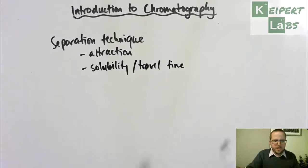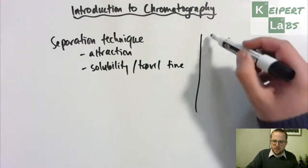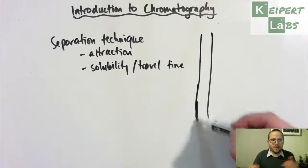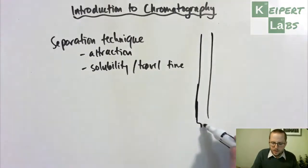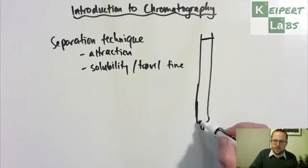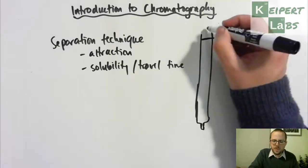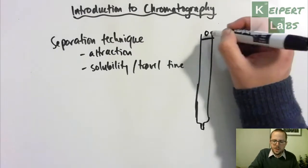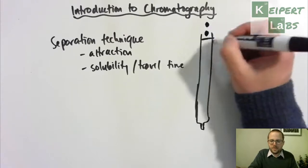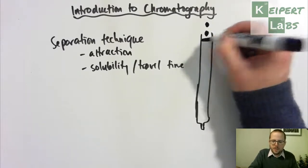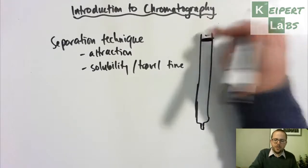I want you to picture a column standing up vertically like a burette. So perhaps picture it like this. What we do is fill up this column with material like cotton wool, or sand, or something like that. And we drop in a complicated mixture, loading it up at the top here, so it's now present at the top of our column.